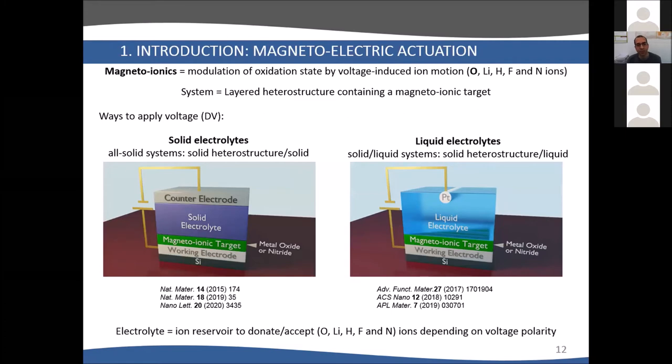Or you can think of another alternative, like having an iron oxide like hematite or magnetite, and then intercalate lithium ions using an approach similar to lithium batteries. Because of this ion intercalation, you modify the properties of the oxide. In magneto-ionics, the voltage-induced ion motion can be oxygen, lithium, hydrogen, fluorine, or nitrogen. The idea is to use either solid or liquid electrolyte.